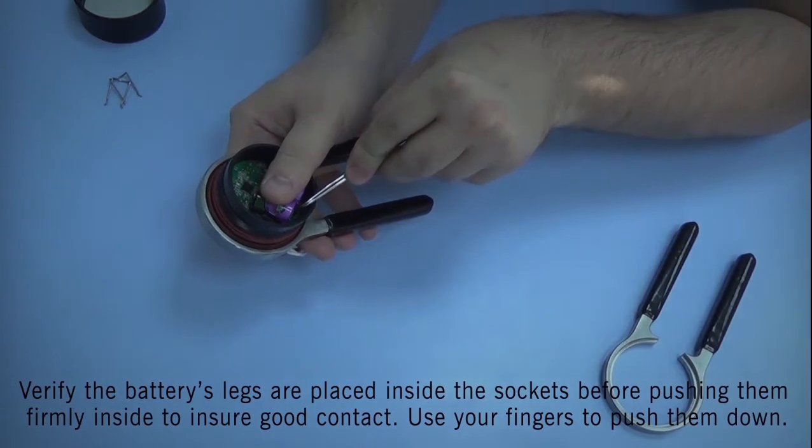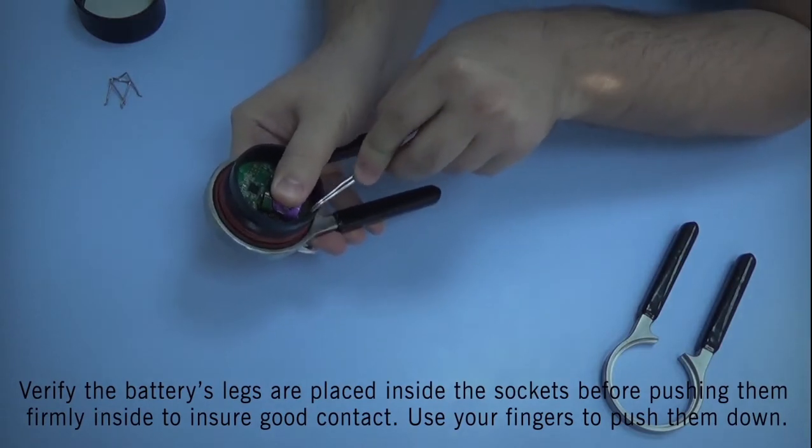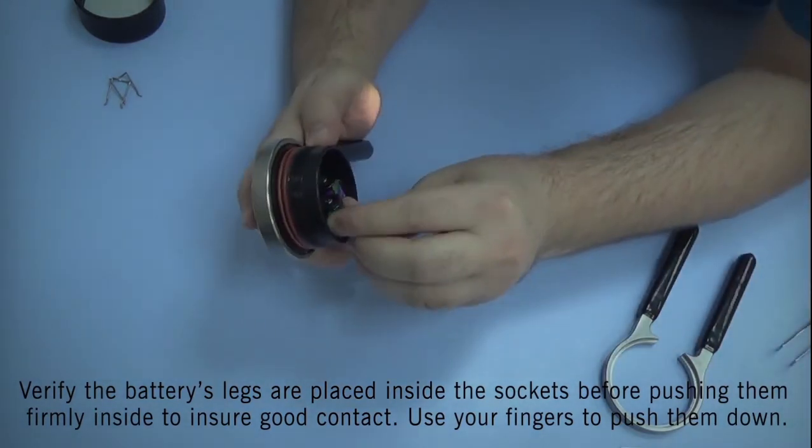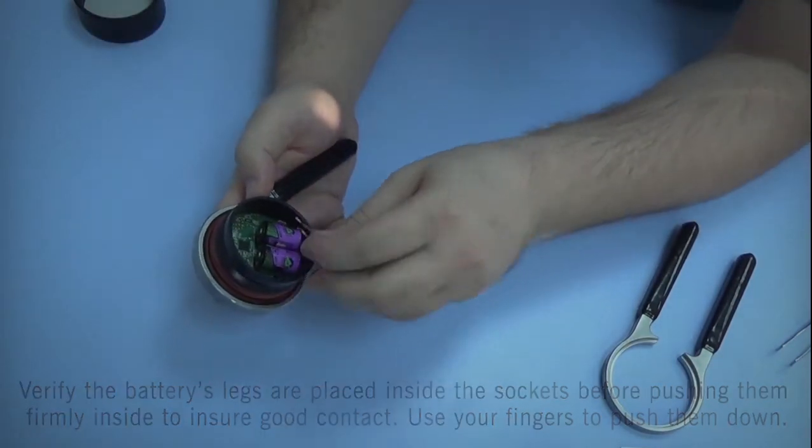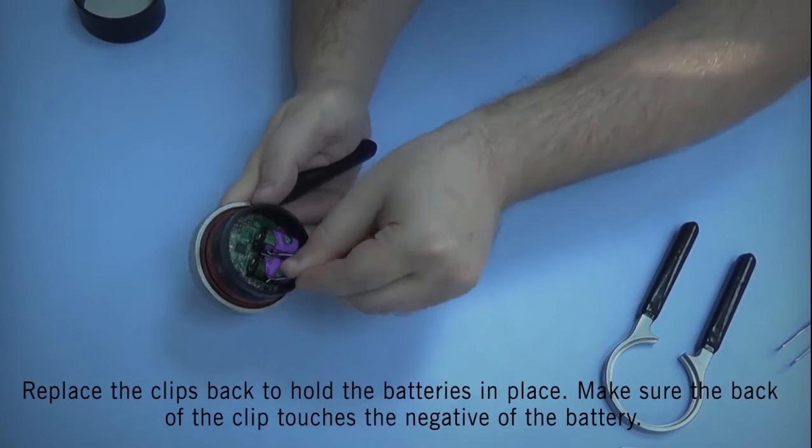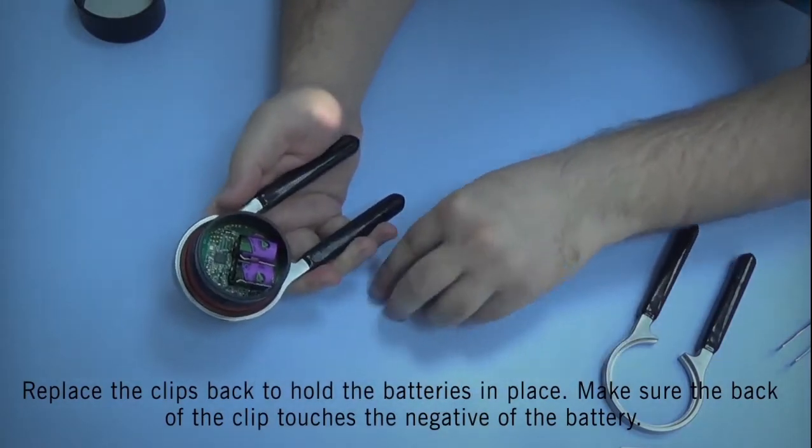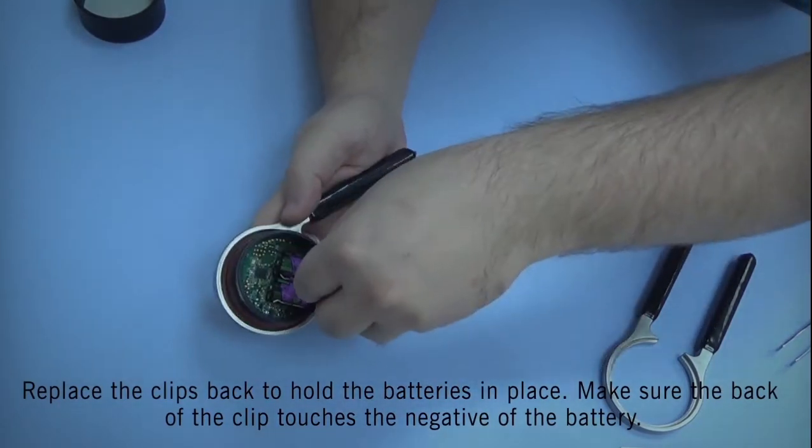Verify that the battery pins are placed inside the sockets before pushing down on the battery firmly to ensure good contact. This will help avoid damaging the battery pins. Place the safety clips back and make sure that the back of the clip is touching the negative end of the battery.